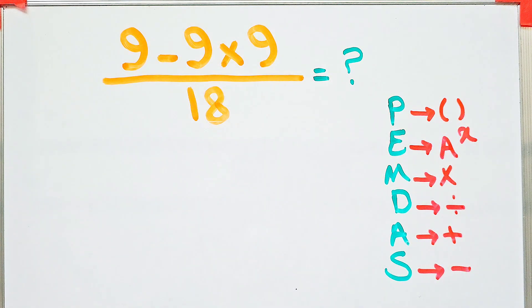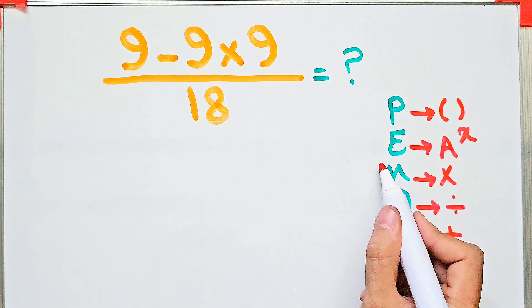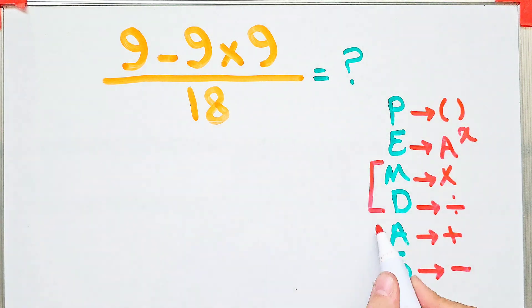Don't forget the multiplication and division have the same level of priority. Also, addition and subtraction have the same priority. When we have both in an expression we start from the left and simplify.